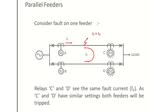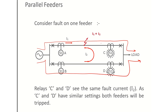During normal operation, the current flows from source to load on both feeders. In case of a fault on feeder 1, the current through relay C reverses direction while the current through relay D continues in the same direction as load current. If we use directional overcurrent relays at C and D, set such that they do not operate when the current direction is the same as load current, but do operate when current direction is opposite to load current.